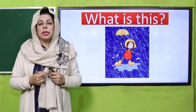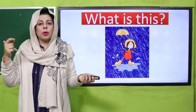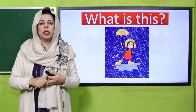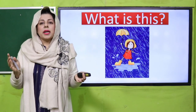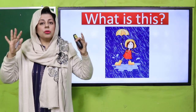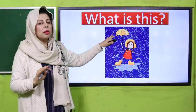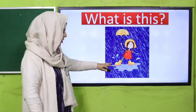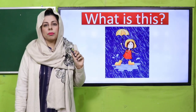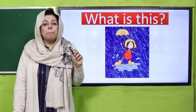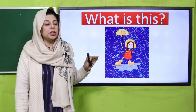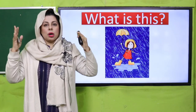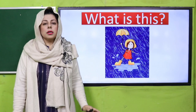The next picture is of a girl holding an umbrella. And why is she holding an umbrella? Kyunki baarish ho rahi hai. Jee haan, baarish ho rahi hai. Aaj ka jo hamaara sound hai, it is about the starting sound of the word rain — R, rain.